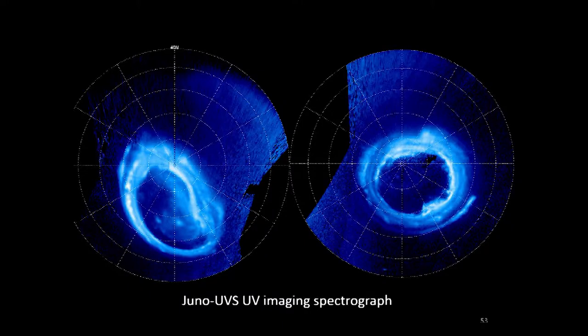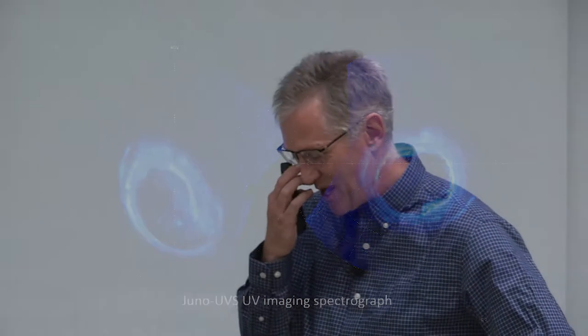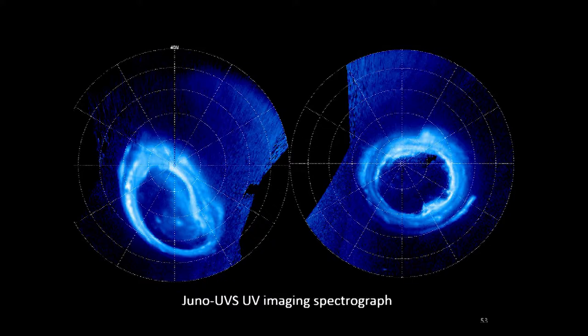Juno has cameras, UV spectrometers to image the aurora, a waves instrument for both radio and plasma waves, an infrared spectrometer, plasma instruments for high and low energy particles, a magnetometer for measuring magnetic fields, a microwave radiometer for probing into the atmosphere, and gravity science from orbiting the planet itself. These are images from the Juno UV imaging spectrograph. It's a challenge doing this imaging because Juno comes through on closest approach very rapidly and the spacecraft is spinning. The strategy is to take a single slit that, as the spacecraft rotates, builds an image in patches and swatches of the polar region, which are then stitched together.